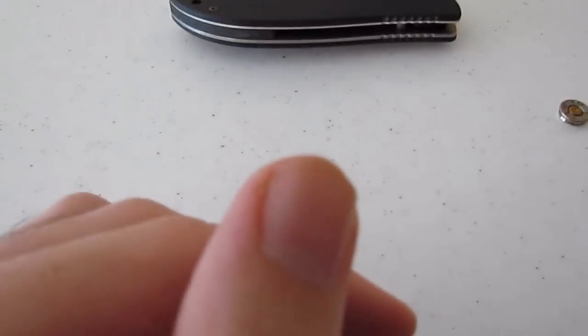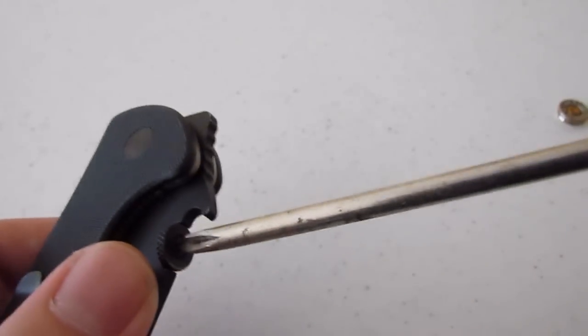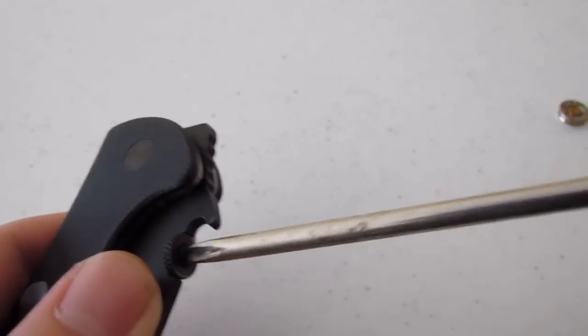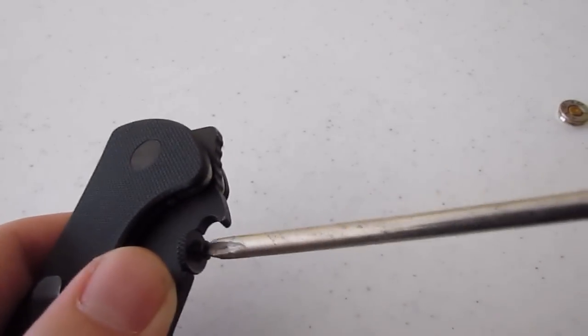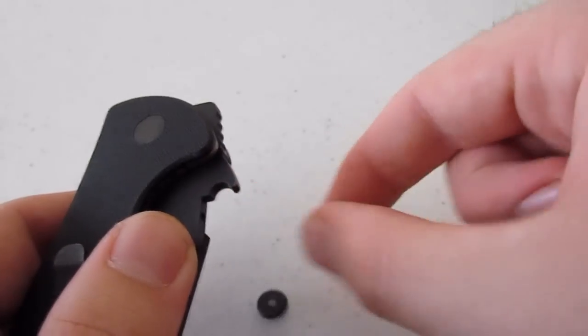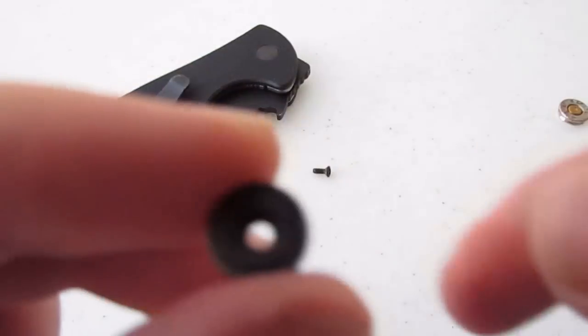Now, let me take off this thumb disc real quick. All you need is a Phillips screwdriver and you can undo this. Alright. So, here's the thumb disc.